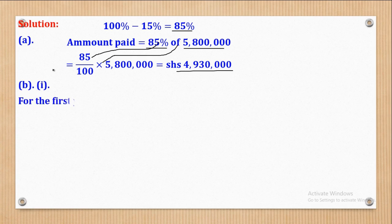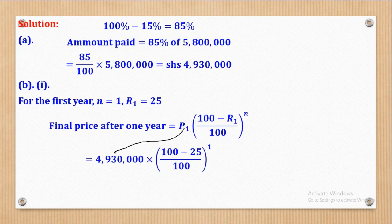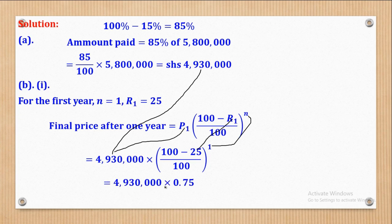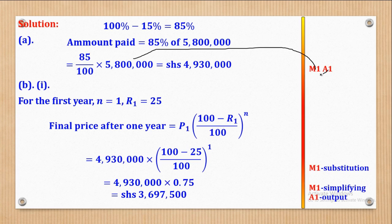Part B(i): After the car is bought, its value depreciates by 25% in the first year. N equals 1 and R equals 25. Using the depreciation formula and substituting the principal as 4,930,000, R as 25, and N as 1: simplifying the bracket gives 0.75, and simplifying further gives the amount after one year as shillings 3,697,500. M1 for substitution and A1 for output.